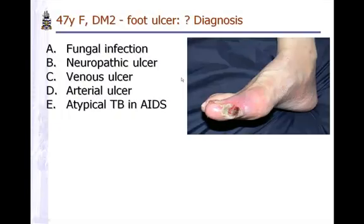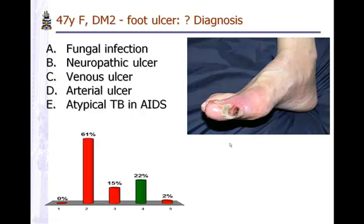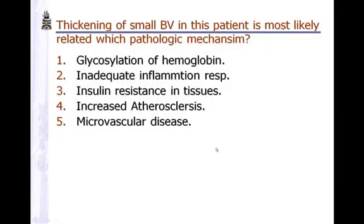This is a diabetic foot ulcer, although more history will be given in the exams. Observe the dark center — whitish, but most of the area is inflamed. The whole toe is inflamed with reddish, shiny skin and surrounding inflammation. The central dark scar is typical of arterial ulcers, which are usually painful. Thickening of small blood vessels in this patient is most likely related to microvascular disease or microangiopathy.